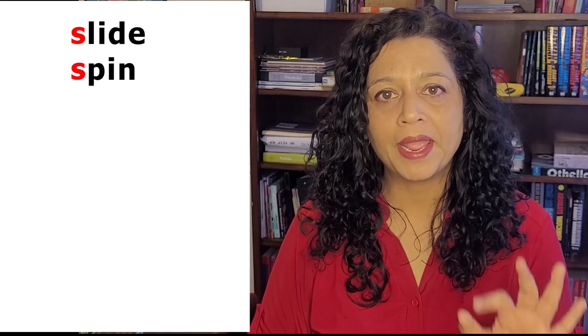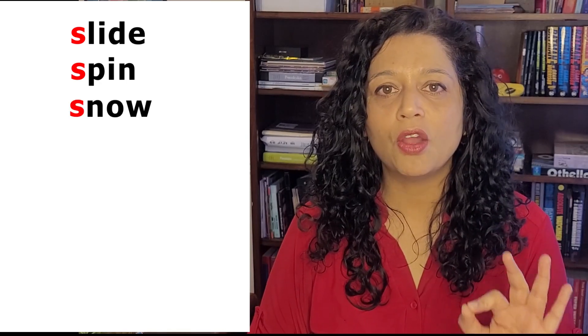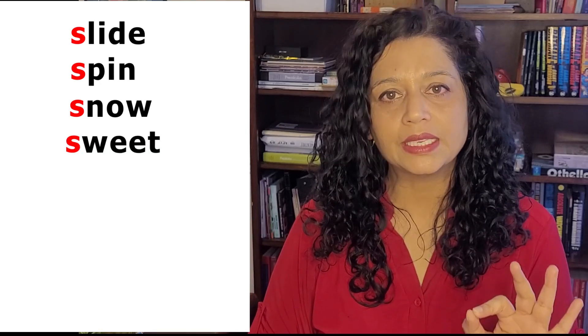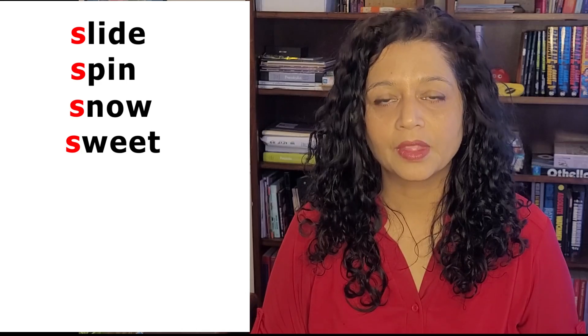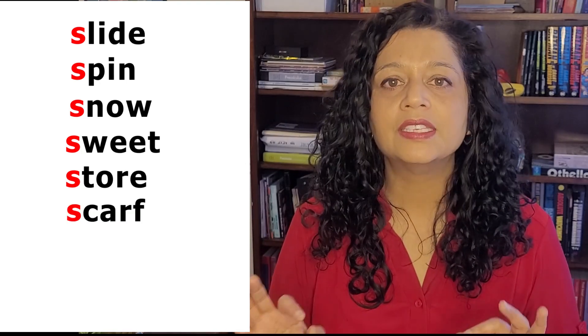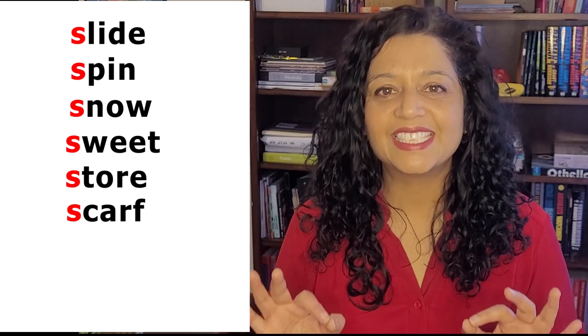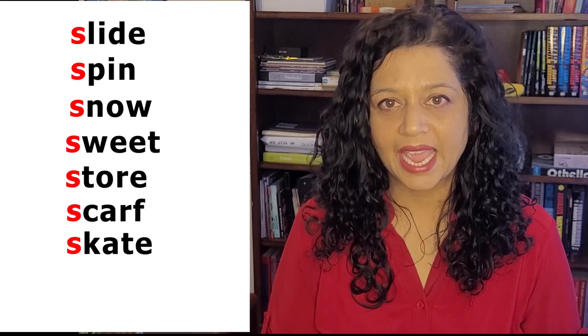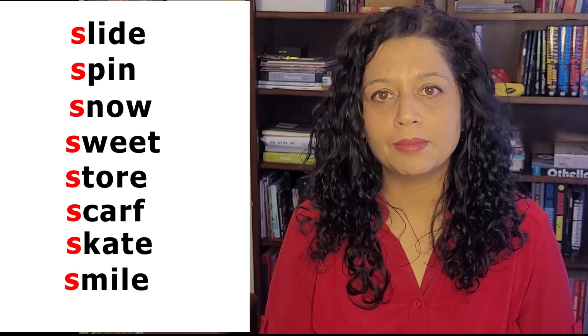Finally, let's look at some examples of consonant blends. There are multiple different consonant sounds that can combine with S to create a consonant blend — I've tried to pick one word from each possible sound combination. Here we go: slide (SL blend), spin, snow, sweet, store, scarf, skate, smile.